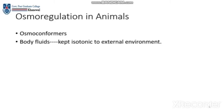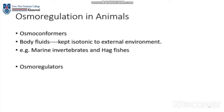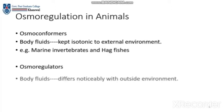There are multiple types of animals. Osmoconformers keep their body fluids isotonic to the external environment, meaning the solute concentration in their body is maintained equal to the surroundings. Examples include marine invertebrates and hagfishes.